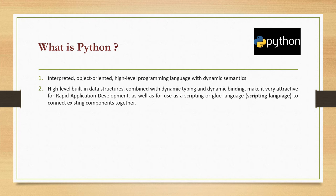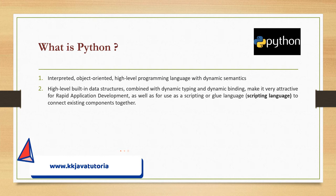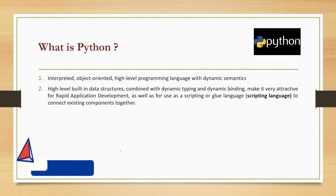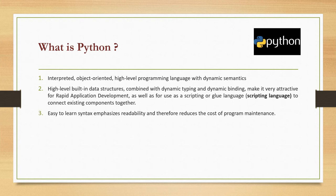When we talk about dynamic binding, if you compare Python with other languages like C, C++, or Java, you need to declare a data type when you declare a variable. But that's not the case with Python. In Python, if you assign a value to a variable — say x — it can be a number or a string, and Python will identify the type at runtime, not at compile time.